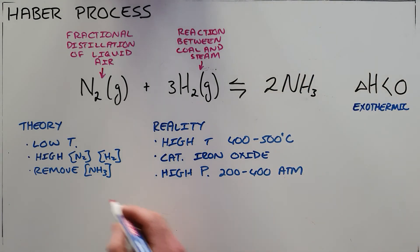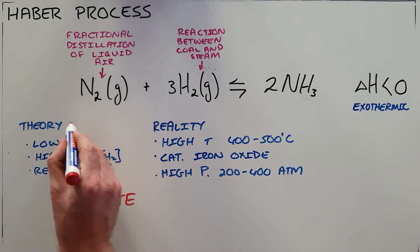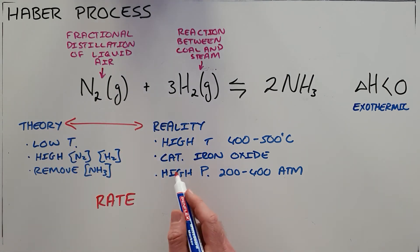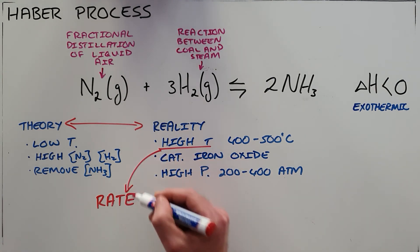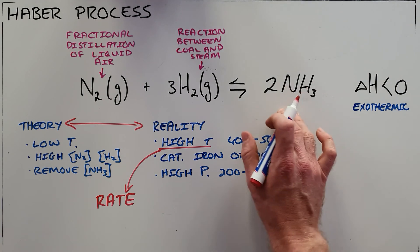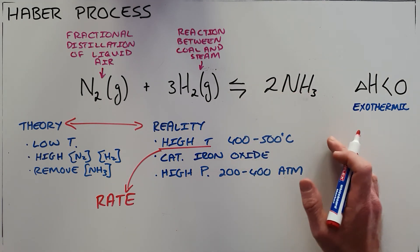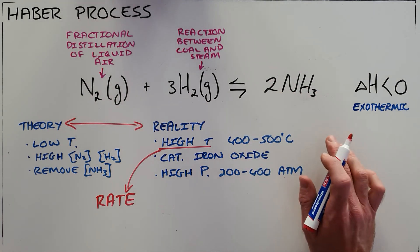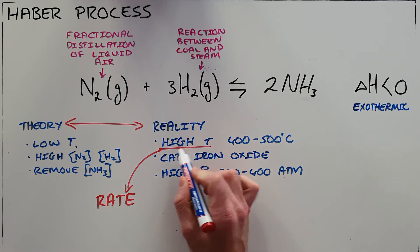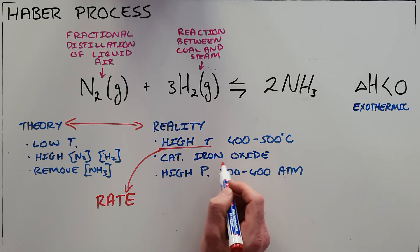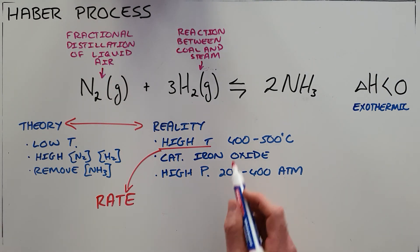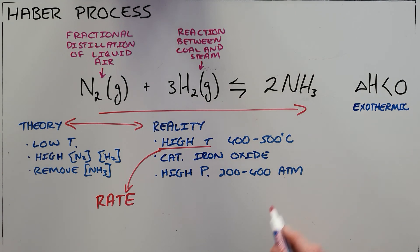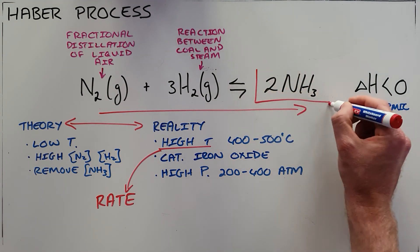But that does not take into account the rate of reaction, which is why we have this difference between theory and reality. In reality it is necessary to have a high temperature so that we have a rate of reaction that occurs fast enough to be economically viable in industry. That high temperature is compensated for by introducing a catalyst into the system and doing this reaction at a very high pressure that forces us to favor the forward reaction that produces as much ammonia as possible.